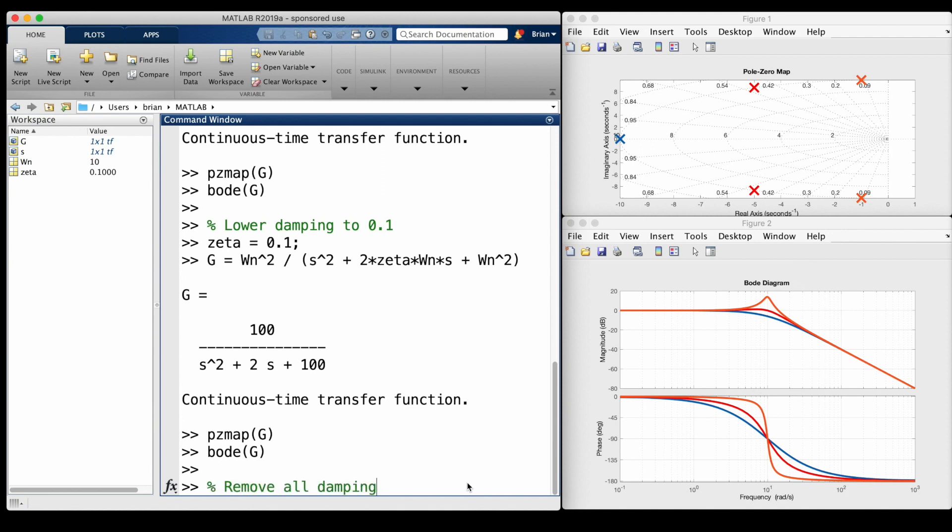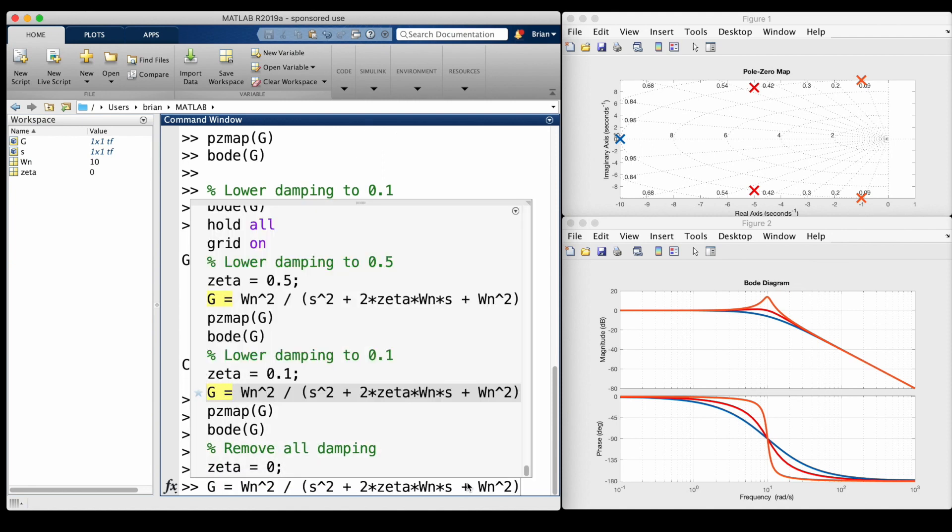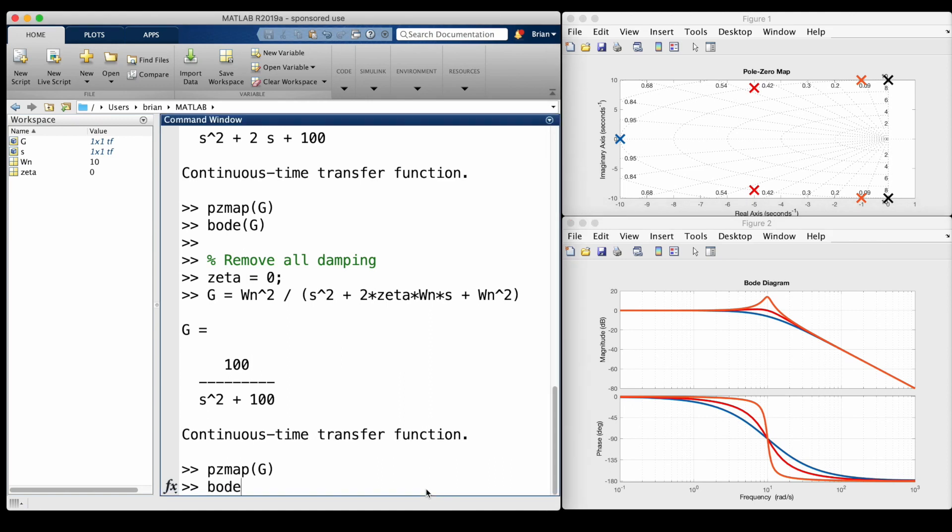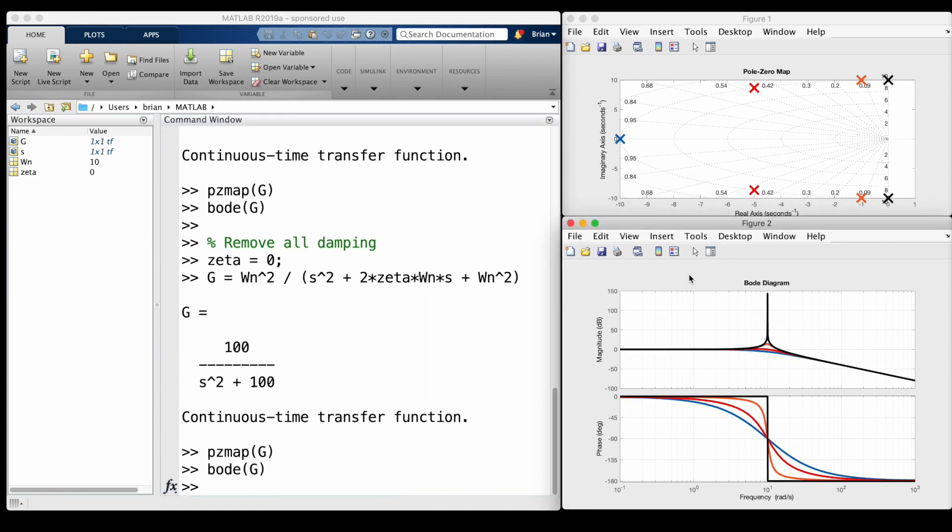And if we remove damping from this system altogether and set zeta equals 0, we get an undamped second-order transfer function. The two poles lie right on the imaginary axis, and the frequency response for this system has an extremely narrow peak with an infinite gain right at the natural frequency.